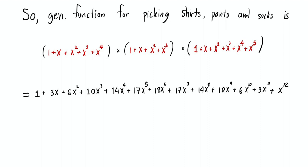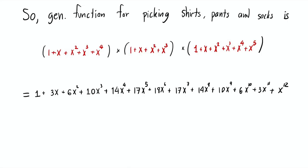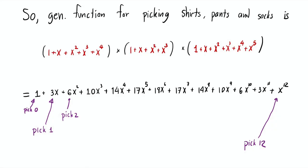With the product, you get the full table of the number of ways to pick items. Going back to the shirt, pants, and socks analogy: for zero items you get 1, one item gives 3, two items gives 6, and 12 items gives 1. The original equation asks for x₁ + x₂ + x₃ = 6, meaning we pick 6 items. So we look at the coefficient of x to the 6th, and the answer is 18.